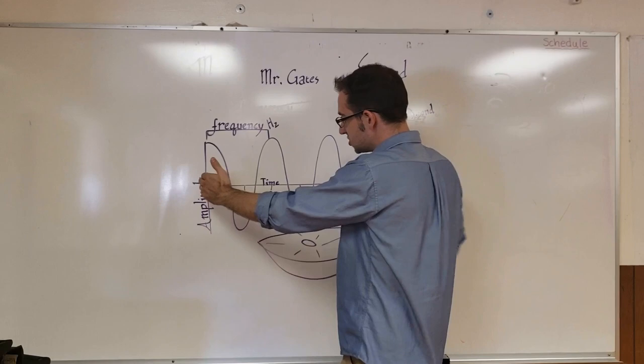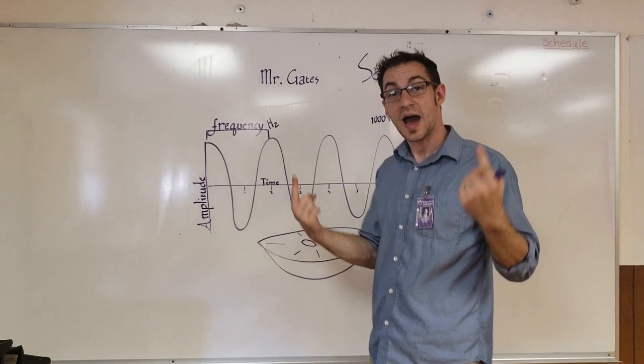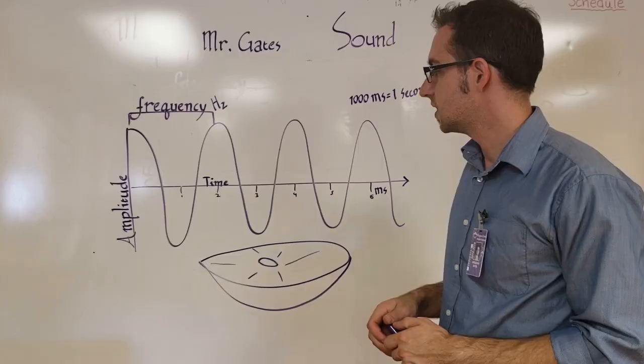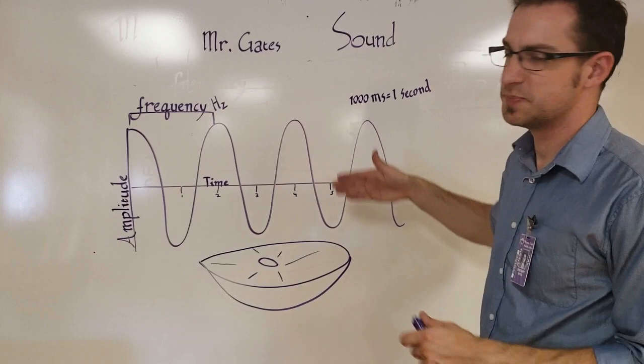If you squish these together and your speaker is moving really fast, that means that your sound is going to be higher. And if you spread these apart and you make it move slower, then that means it's going to sound lower. Here we have a sine waveform, which is a specific kind of tone.